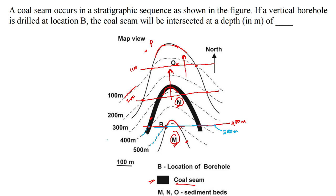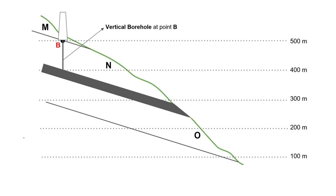This means that the situation is as follows. I have constructed this profile section and you can see that all the beds are dipping towards the north direction — so this will be the north direction as we have seen on the map. The slope of the ground, shown in green, is also in the north direction and the dip of the bed is also in the north direction. This is bed O, this is the coal seam, then bed N and M.